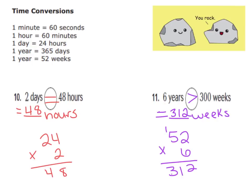Okay, let's check our work. I had to change my 2 days all to hours so I can have hours and hours. There are 24 hours in 1 day, so I needed to multiply 2 times 24, which gave me 48 hours — so 2 days is equal to 48 hours. For number 11, I had to change 6 years to weeks. There are 52 weeks in 1 year, so I multiplied 52 times 6, which gave me 312. That means 6 years is greater than 300 weeks.